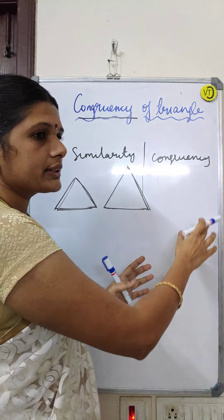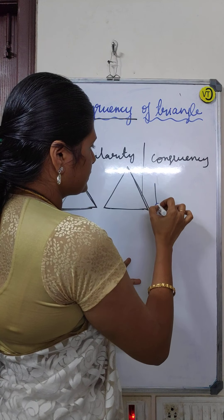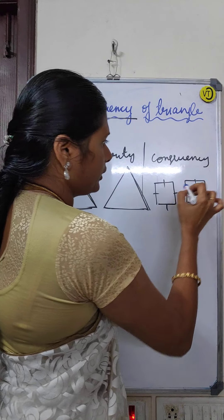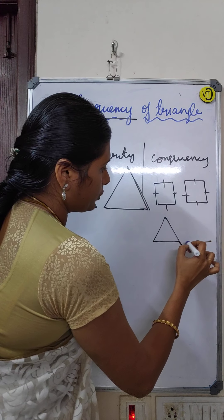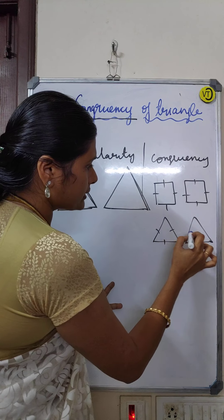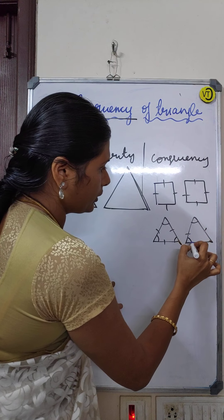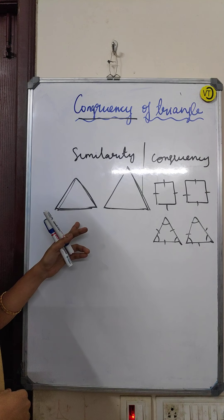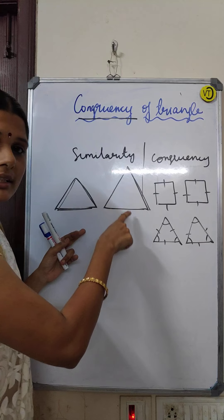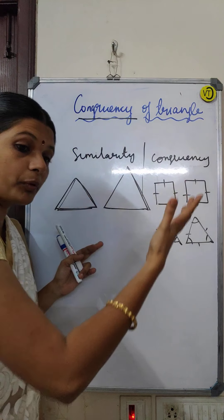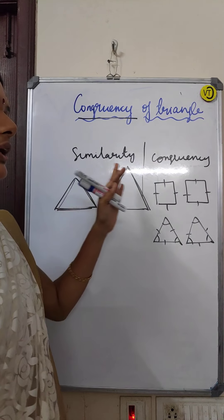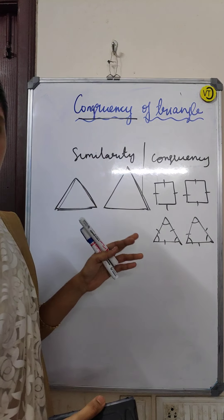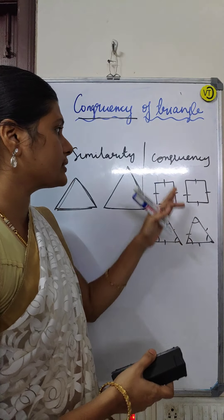Congruence means the two figures are very same. For example, a square and again another square where all four sides are equal, or a triangle and another triangle where all sides and all angles are very equal — that is congruence. But in similarity, angles are the same but sides are only proportional, like 1:8 or 1:58, whatever the ratio.